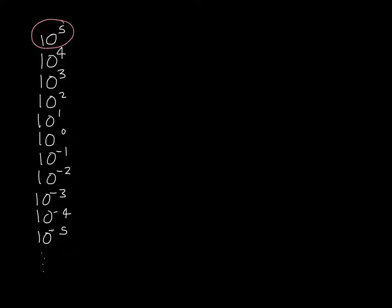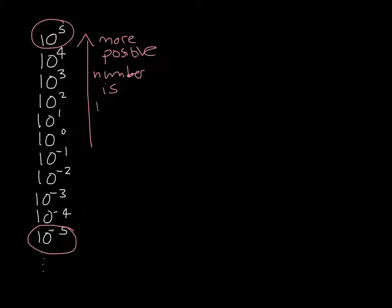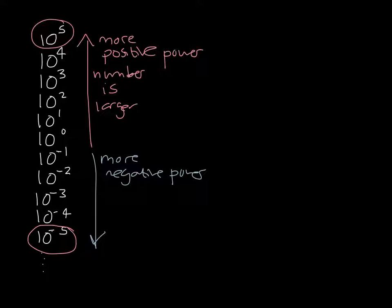We are going to do a little bit of practice at converting numbers into standard form when they're not presented in standard form. But before we do that, it's important to make a note of how powers work. Here is a list of powers of 10 — the largest is 10 to the power of 5, and the smallest value provided is 10 to the negative 5. As the powers become more positive, the number becomes larger. As the powers become more negative, the number becomes smaller.